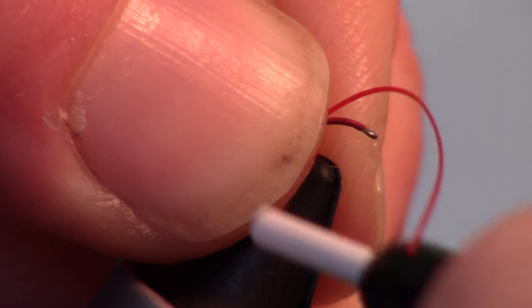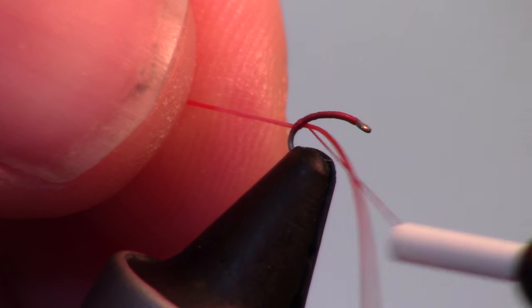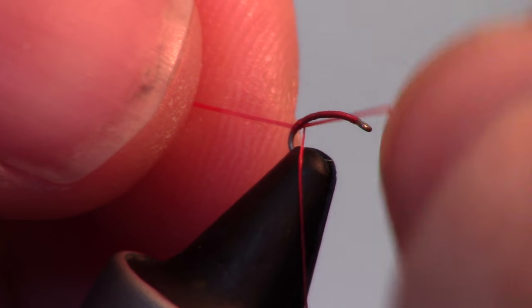Now snip a strand of baby bug legs or any rubber leg material and tie it in with 2-3 wraps. Make sure that material is resting on top of the hook like so.